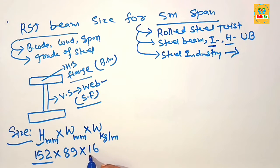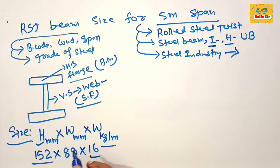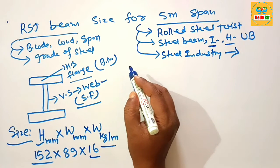It means 152 is H section and 89 is flange width in mm and 16 is weight of RSJ beam in kilogram per meter. Here we find out the RSJ beam size according to thumb rule.